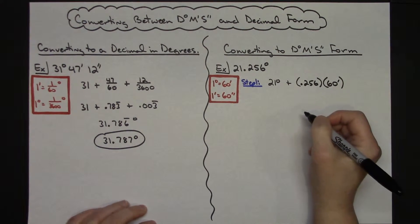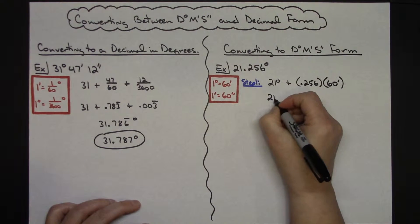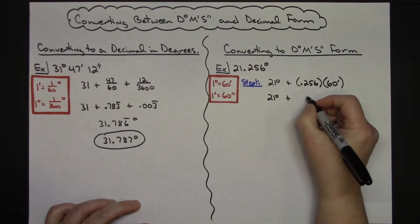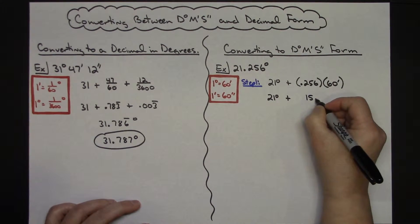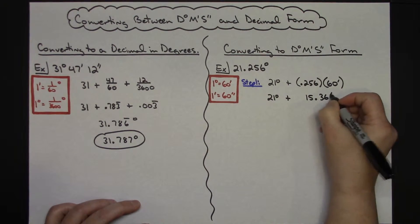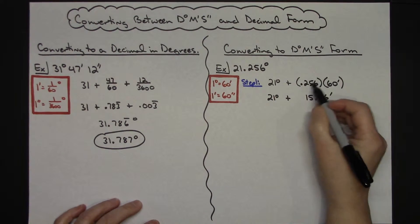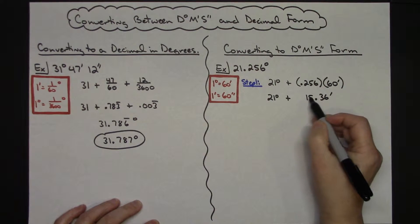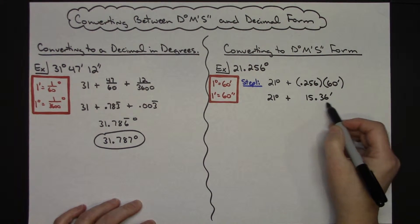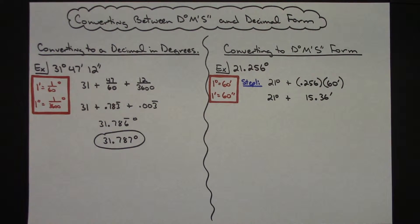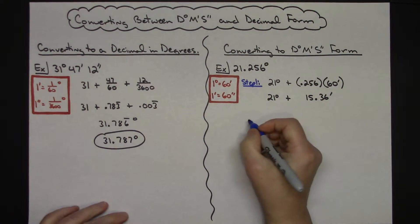Again you'll be using a calculator there: 21 degrees plus this turns out to be 15.36 minutes. So out of this I got an entire 15 minutes and then another portion here will then be my seconds. So now that I know that I can now go to step two.